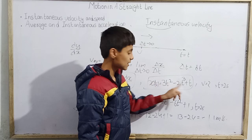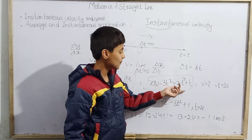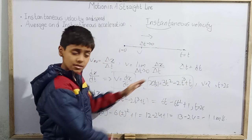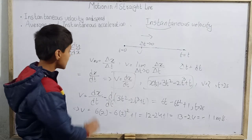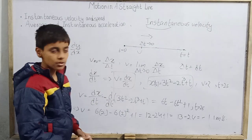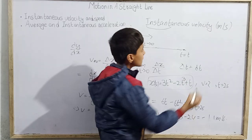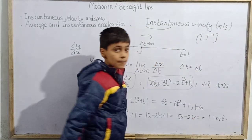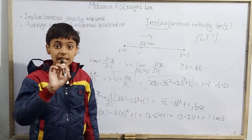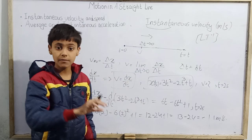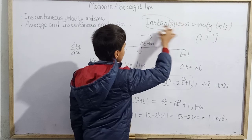Velocity at t equals 2 seconds is negative, minus 11 meters per second. If x(t) is given as a function of time, first find velocity as a function of time and then substitute the value of t. The unit is the same — meters per second. The difference: average velocity is for a duration while instantaneous velocity is just for an instant.